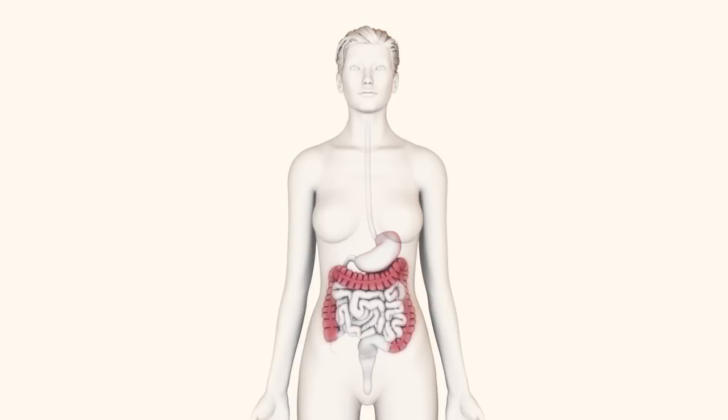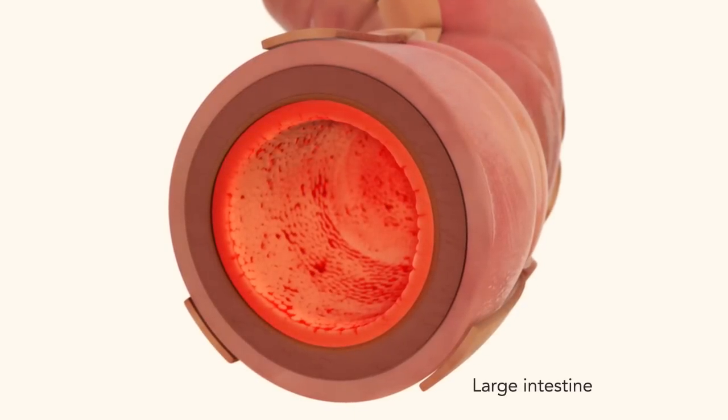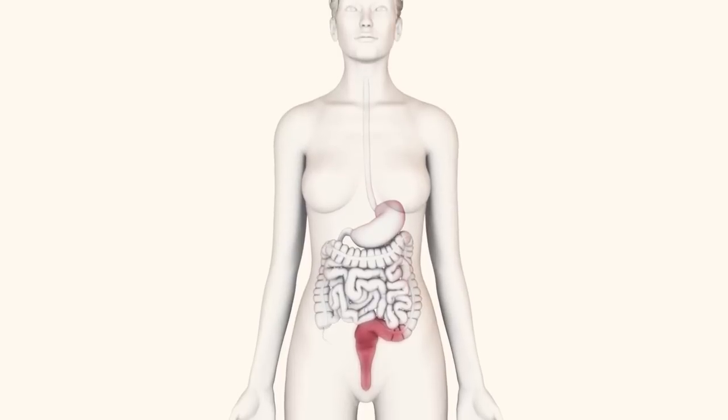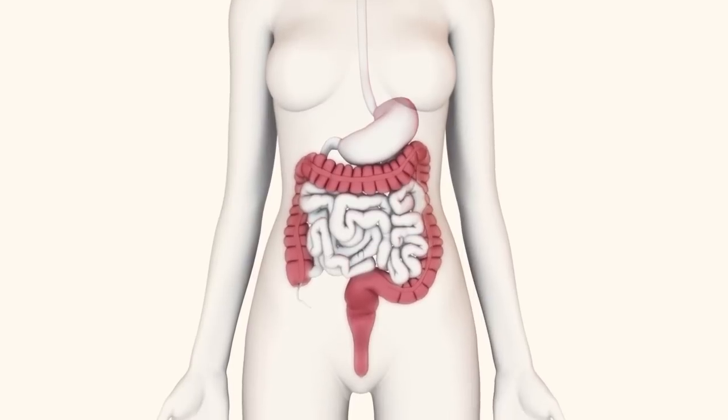UC is limited to the large intestine, also known as the colon, and can include the rectum. Inflammation occurs only in the innermost layer of the lining of the intestine. It usually begins in the rectum and lower part of the colon but may spread continuously to involve the entire colon.